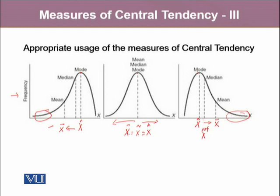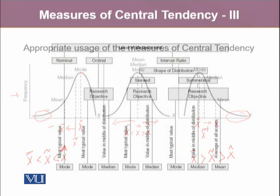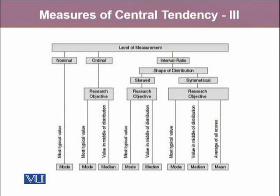The central observation is median. Therefore, we can say that in positively skewed data, mean is greater than median and they both are greater than mode. And in negatively skewed data, mean is less than median and they both are less than mode.